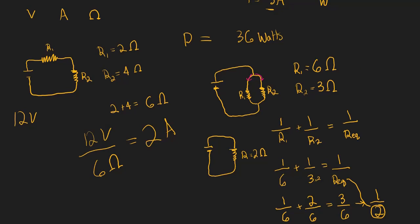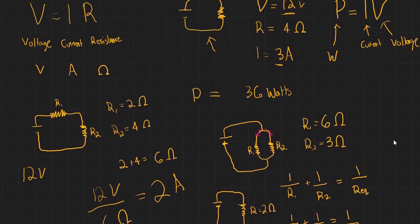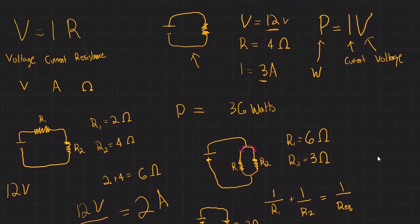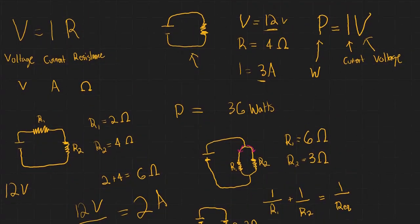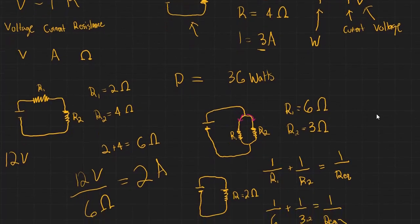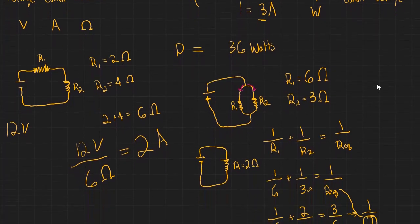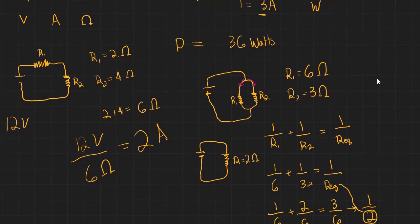And so that is the concept of Ohm's Law. To recap: we can calculate voltage, current, and resistance — given two of the three, we can find the one unknown. We can also calculate power, and we know how to calculate equivalent resistance for resistors in series and in parallel.